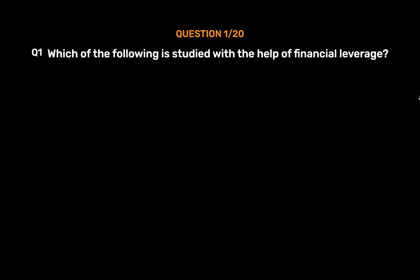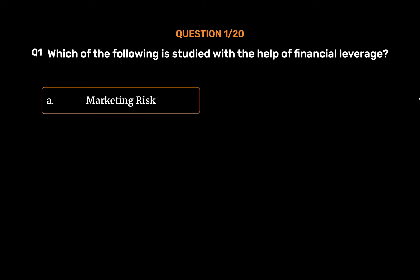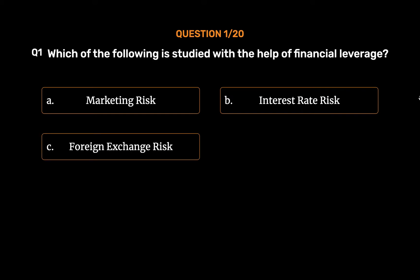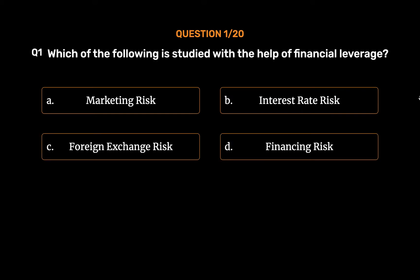Question number 1. Which of the following is studied with the help of financial leverage? Option A: Marketing Risk. Option B: Interest Rate Risk. Option C: Foreign Exchange Risk. Option D: Financing Risk. The correct answer is Option D: Financing Risk.